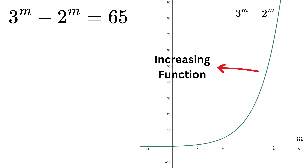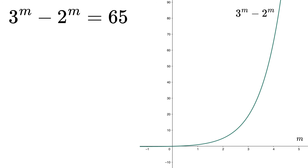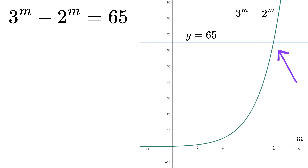We can clearly see that this is an increasing function, which means the value of this function increases as we keep increasing the value of m. If you draw a horizontal line at y equals 65 like this, we can see that both the graphs intersect at only one point. So this means there is only one real solution to our question.